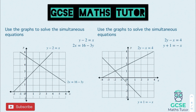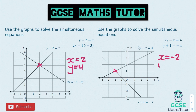For the first question, we have x equals 2 and y equals 4 — hopefully nice and easy. For the second one, we're in the negative part on the x axis, so x equals negative 2 and y equals 1. The important point here is that when solving simultaneous equations graphically, we are looking for those points of intersection.